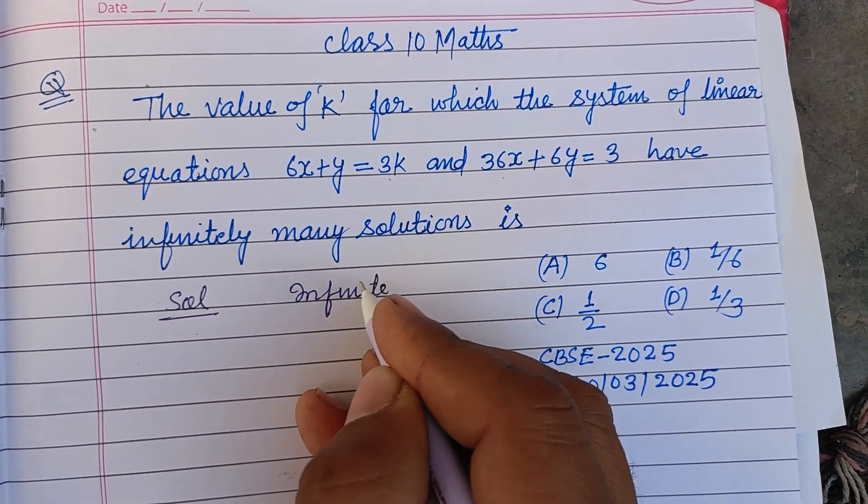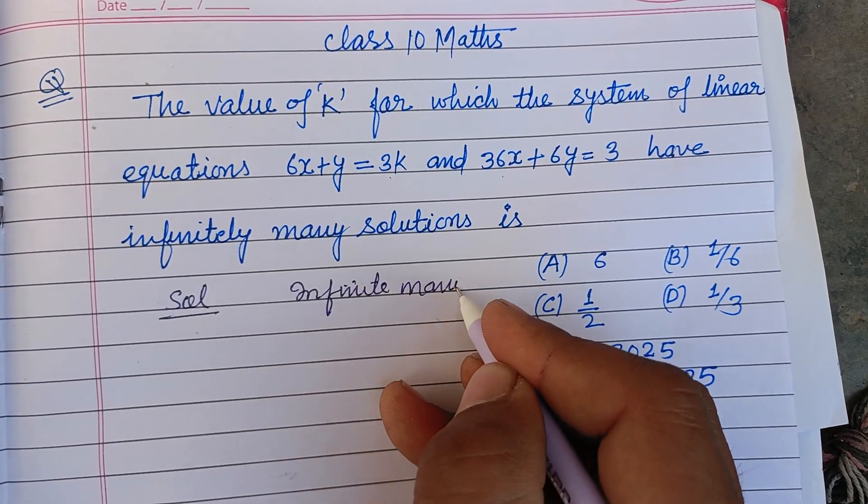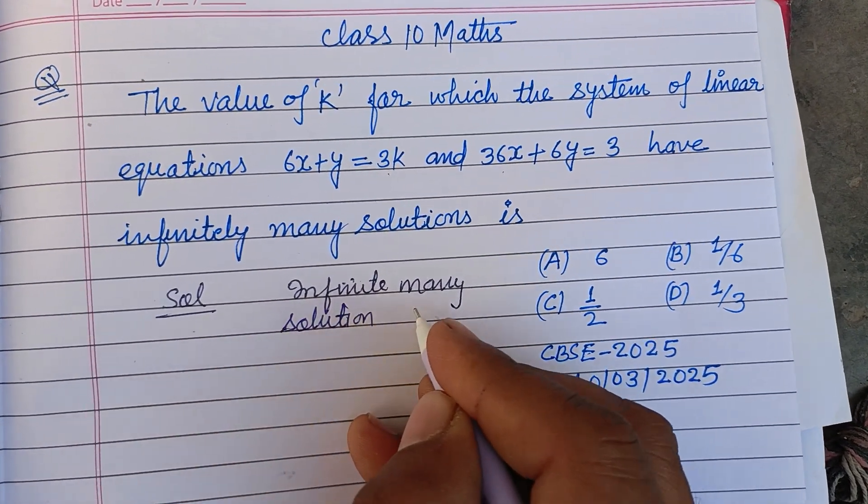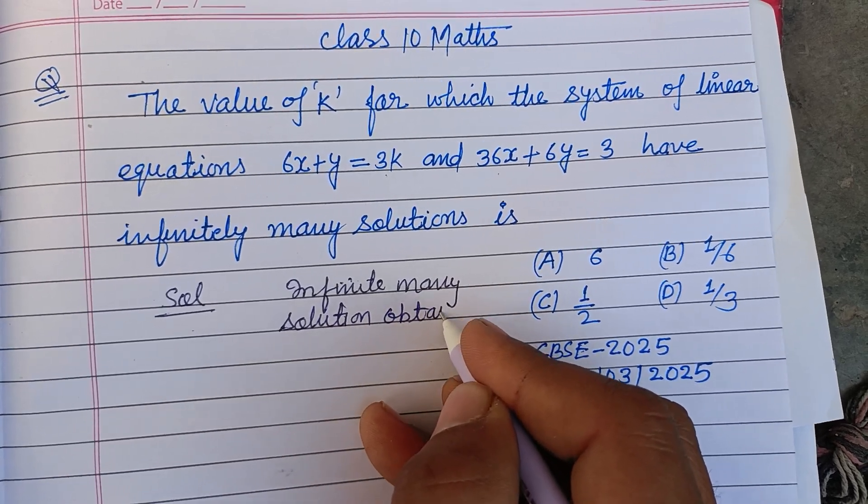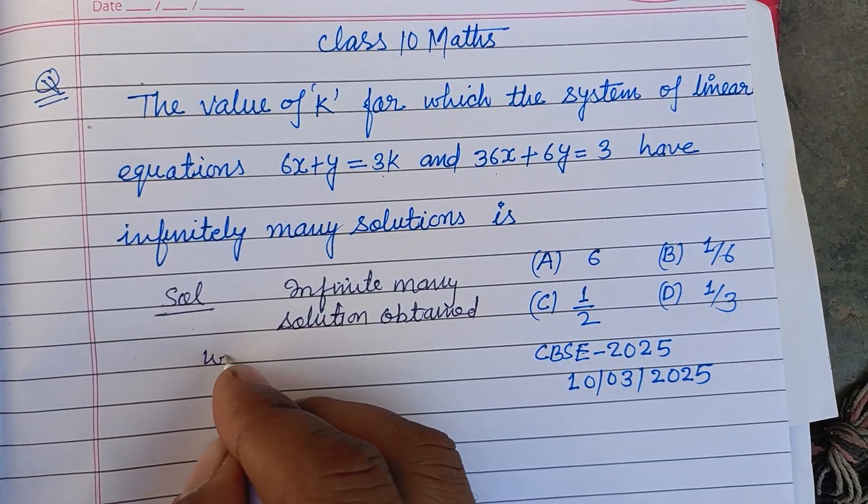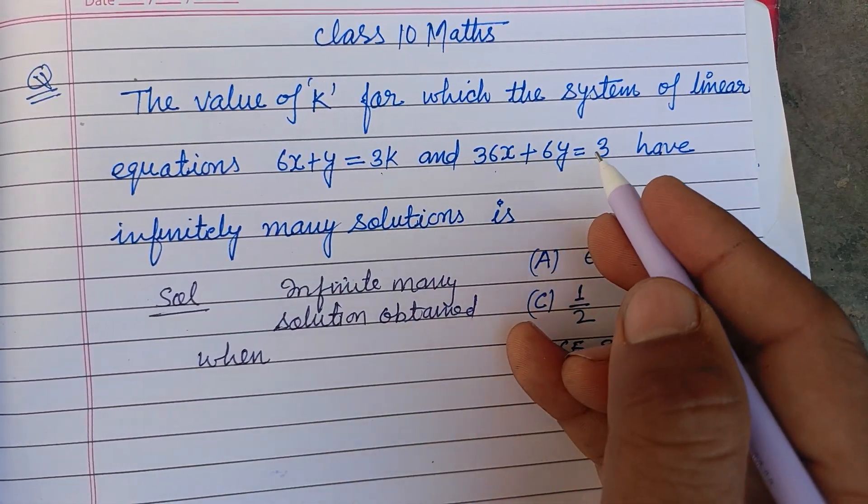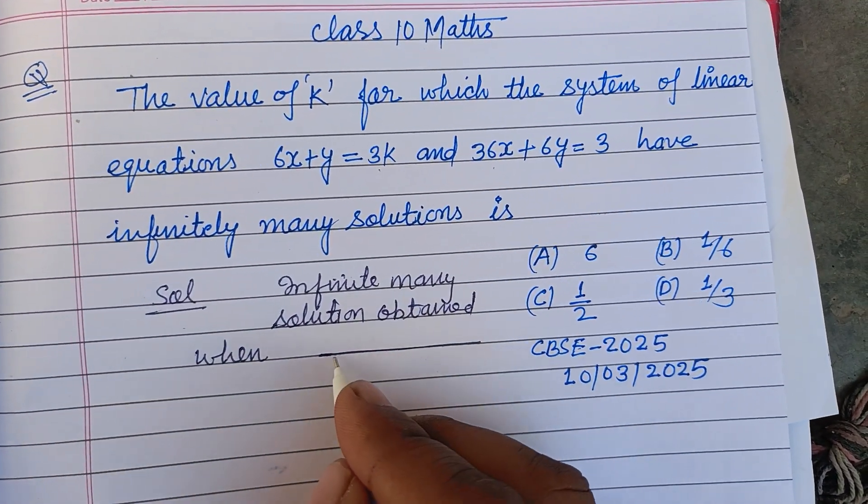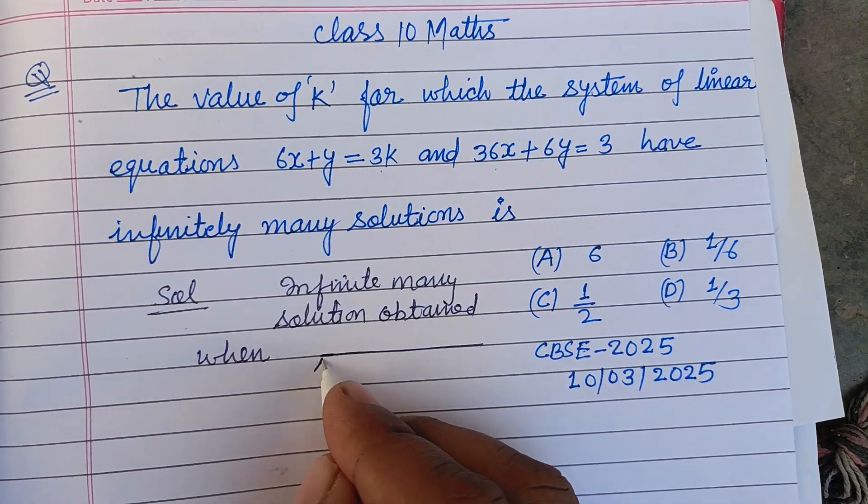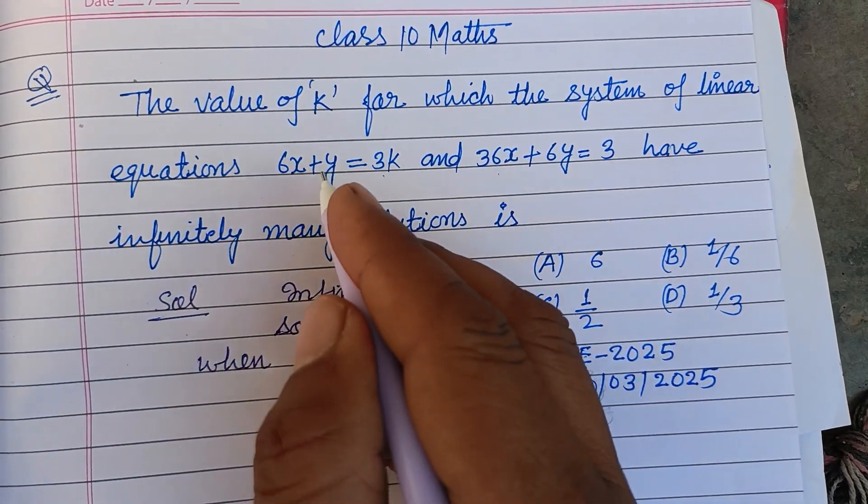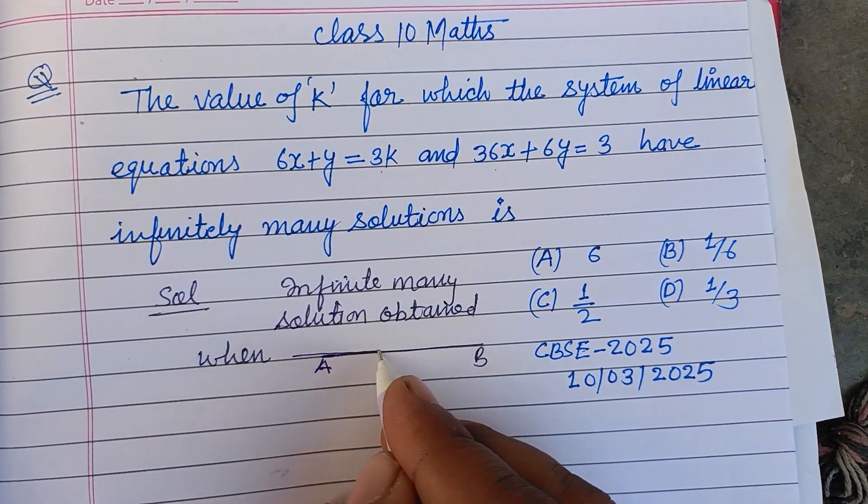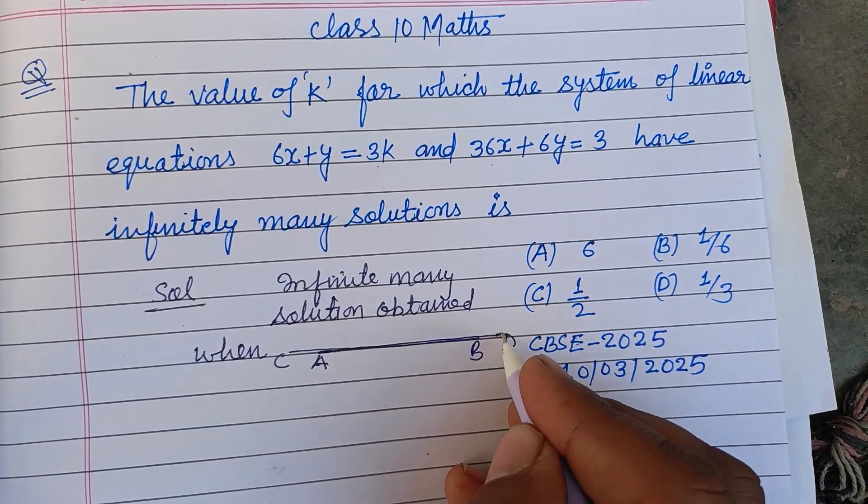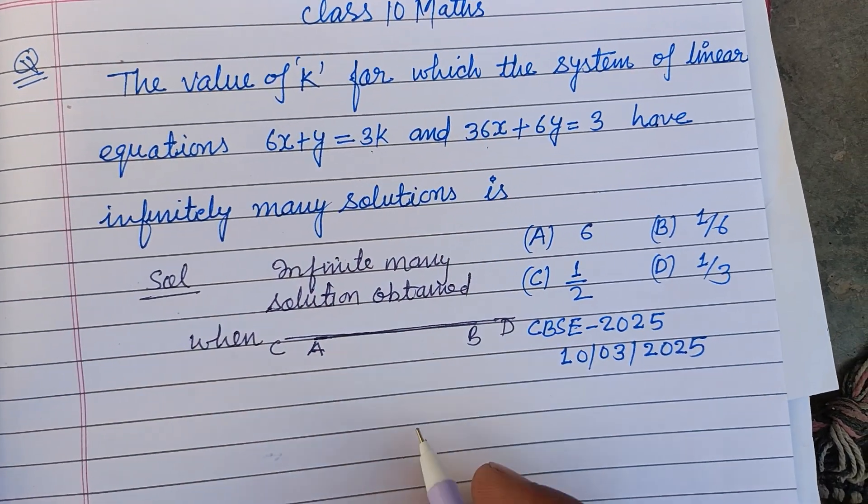Infinite many solutions are obtained when the lines represented by these two equations coincide with each other. If AB is the line represented by the first equation and CD is the line represented by the second, and they lie on each other.